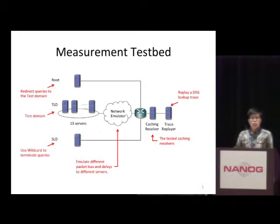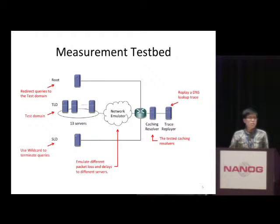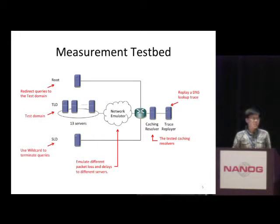We set up certain name servers for the .com domain, and we put a network emulator in front of these name servers so that we can create different packet delay and packet loss. To redirect the DNS queries to the .com servers, we also set up a root server. Since most DNS lookups cannot get direct answers from the .com server, we also set up a name server for the second-level domain.